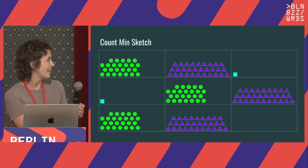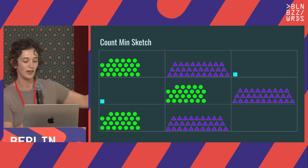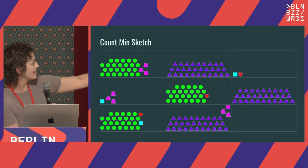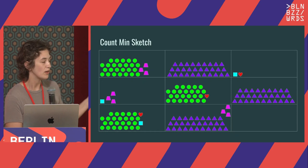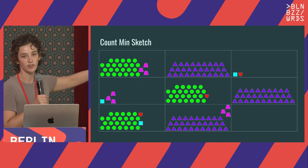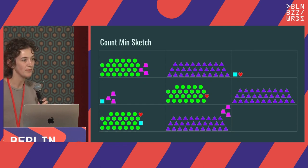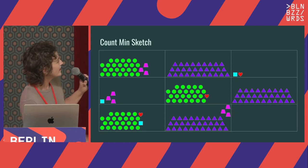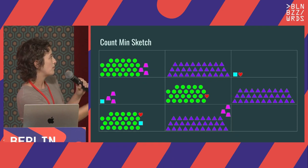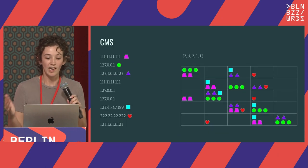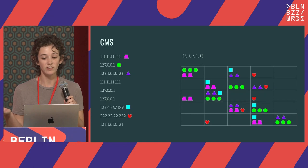So a Count-Min Sketch. Each of these rows is a different hash function being used. In the first row, the blue square and the red heart hash to the same spot, as well as those three bright pink trapezoids and the green things. In a Count-Min Sketch, we just count it all together — we don't know the difference really between the green circles and the pink trapezoids. All I know is that there are five things in that box.